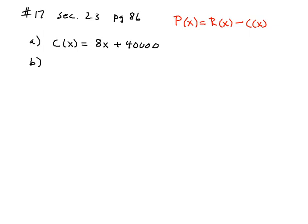B, once the revenue, they tell us they sell for $12 per unit, so if they produce and sell X units, the revenue would just simply be 12 times X, $12 per unit.